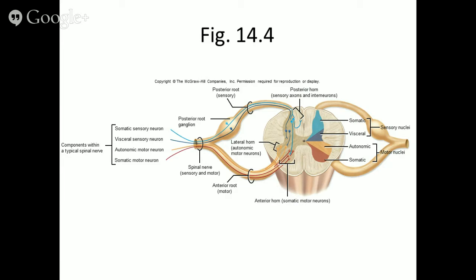If the incoming sensory information is from the external environment — like something stung you on your elbow — then the somatic sensory nuclei will process the incoming sensory information. But if that information was coming from your internal organs, it would be the visceral sensory nuclei who would process that information. If you needed to move your leg in response to make a reflex, you'd use the somatic motor nuclei. But if this was a reflex like your small intestine responding to incoming food from the stomach, that would be the autonomic motor nuclei.